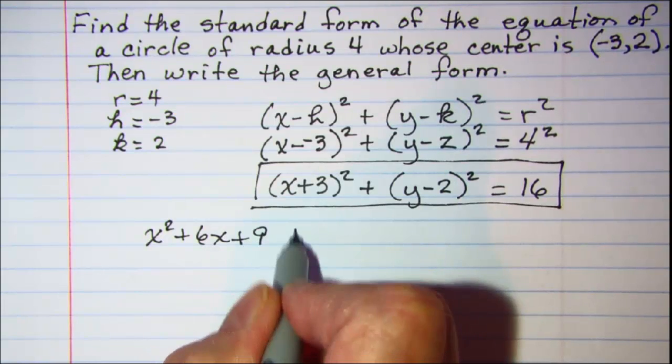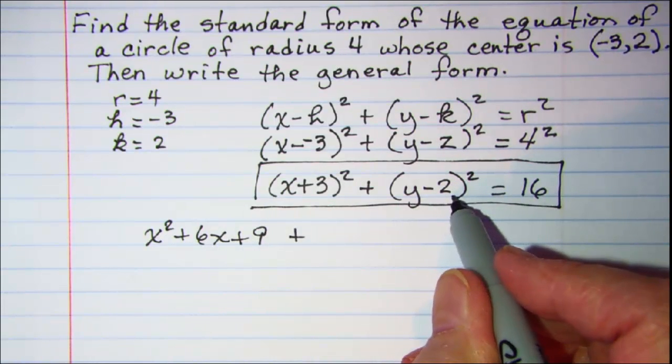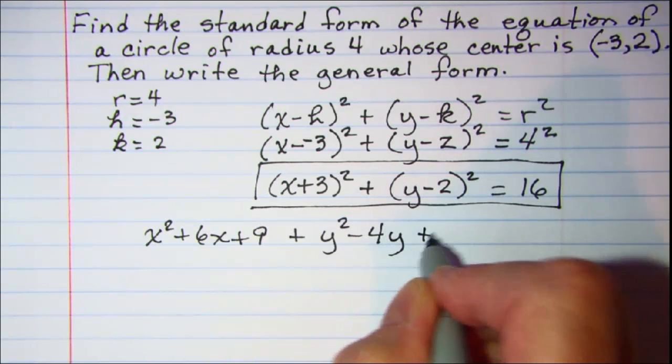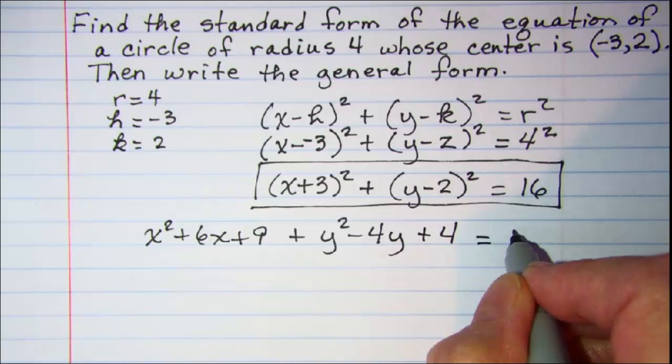and then (y - 2)² is y² - 4y + 4, and this equals 16.